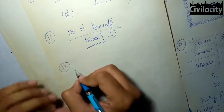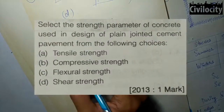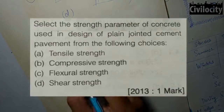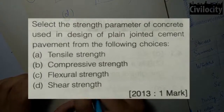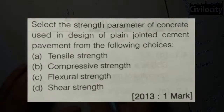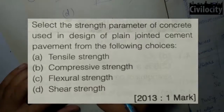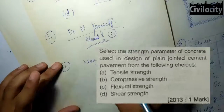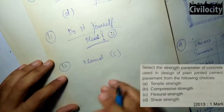This question asks about the strength parameter of concrete used in the design of plain jointed cement concrete pavement. The options are tensile strength, compressive strength, flexural strength, and shear strength. The answer is flexural strength in the case of cement concrete pavements.